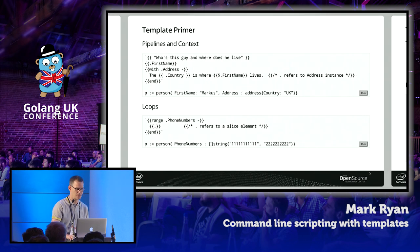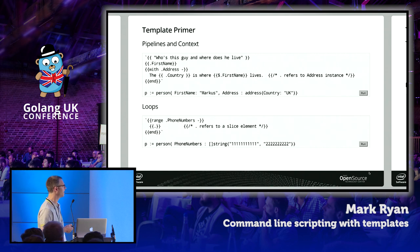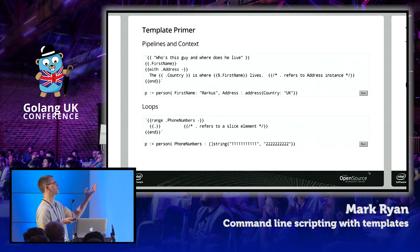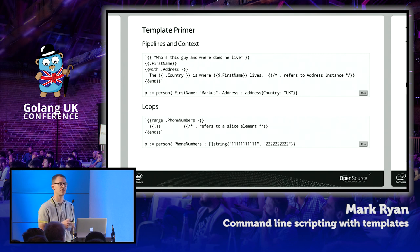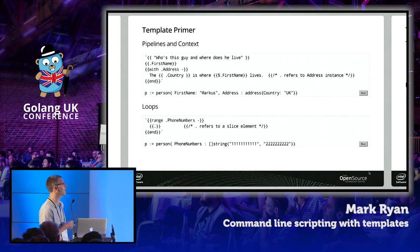Let's look at some of the directives in the templating language. The first thing to understand is the concept of a pipeline — a template expression surrounded by curly braces that evaluates the expression and outputs it to the writer. The expression is a string and evaluates to itself. I've declared a variable p of type person. Once passed via the execute command, I can access elements of this Go variable using the dot symbol. Dot represents the context — it always refers to the variable passed into template.execute. So dot.FirstName evaluates to p.FirstName, which is Marcus.